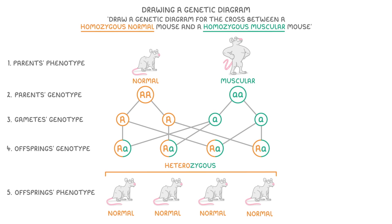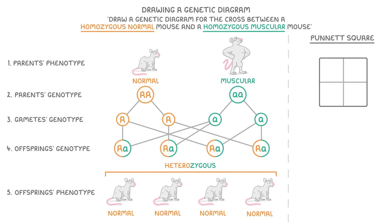We could also show this process using another type of diagram called a Punnett square, which is just a large square split into four smaller squares to give us a 2x2 grid. Then what we do is place one of the parent's gametes at the top and the other parent's gametes on the left, and then fill in each of the four squares depending on the combination of gametes. The benefit of Punnett squares is that they show us almost all the same information as genetic diagrams do, but they're much simpler to draw. The only downside is that they don't show us the phenotypes of the parents or offspring.